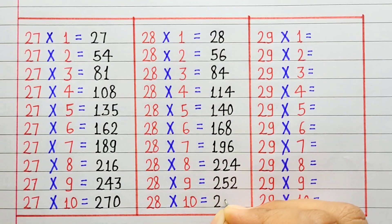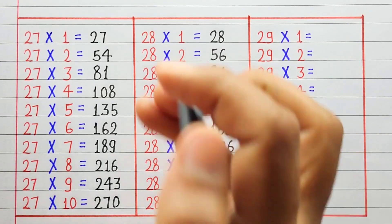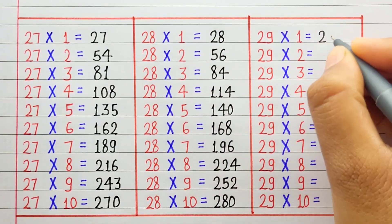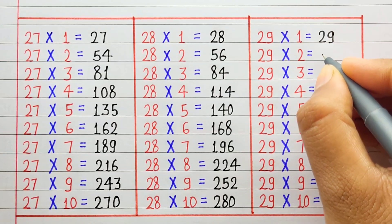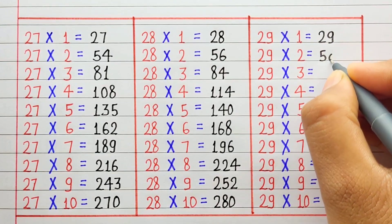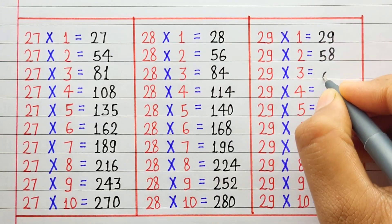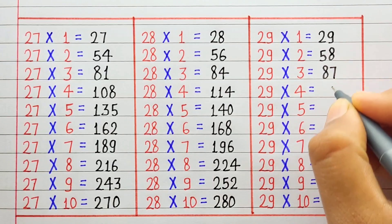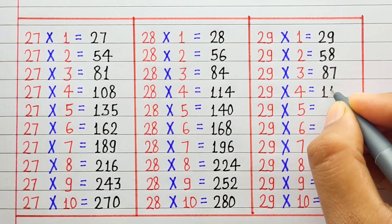28 9 ja 252. 28 10 ja 280. 29 1 ja 29. 29 2 ja 58.